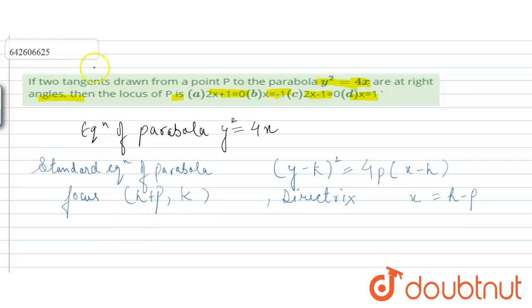So here, h equals 0, k equals 0, and p equals 1.